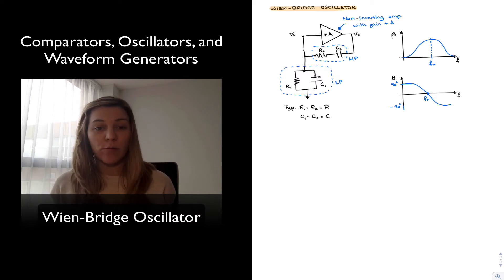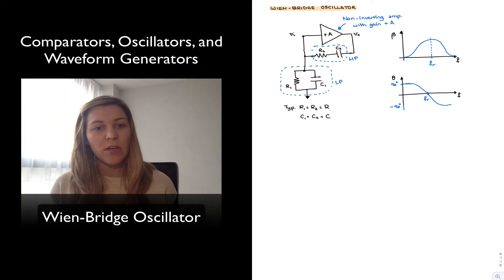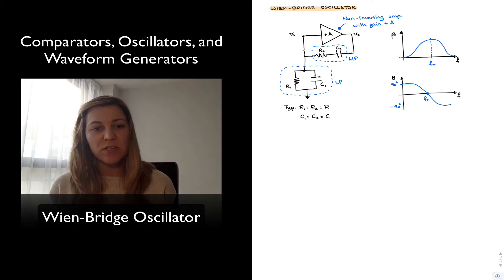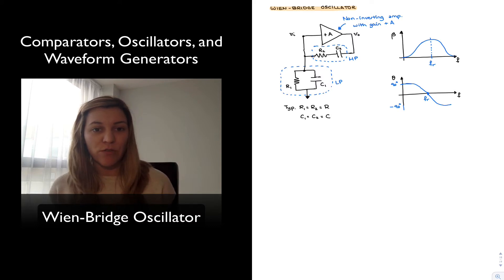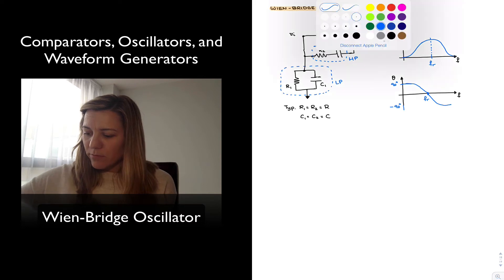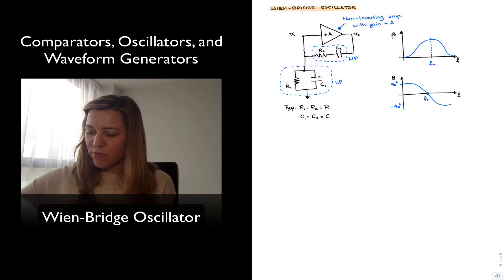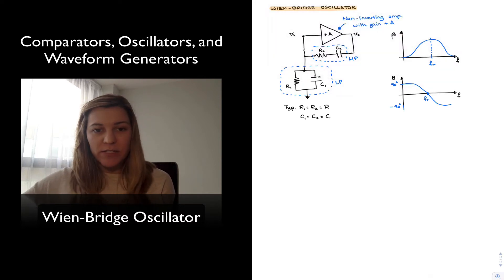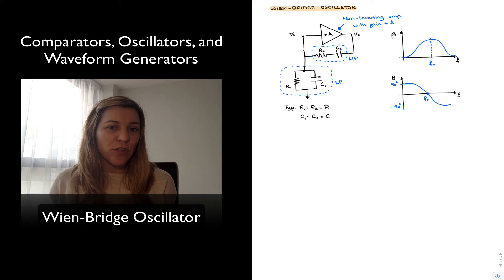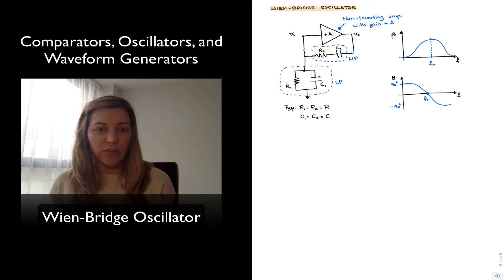We want to be able to calculate what the resonant frequency of the circuit is, because when we are designing an oscillator, we typically want to know what values of capacitors and resistors we need to use in order to achieve the resonant frequency of our choice. Now that we have looked qualitatively at how the circuit operates, we're going to derive some expressions so that we can apply the Barkhausen criterion.